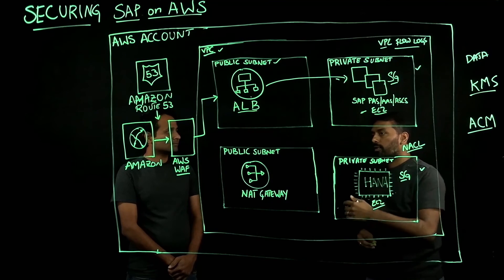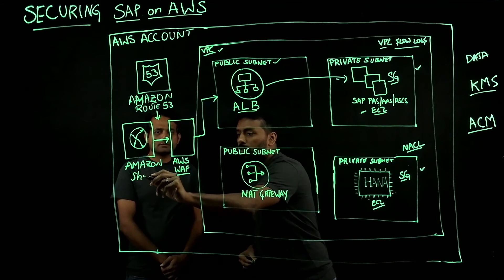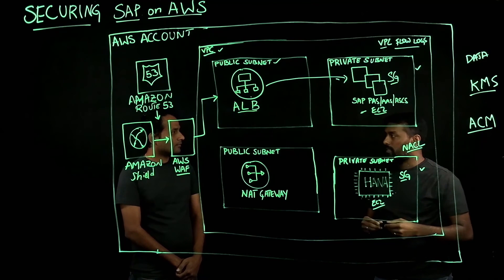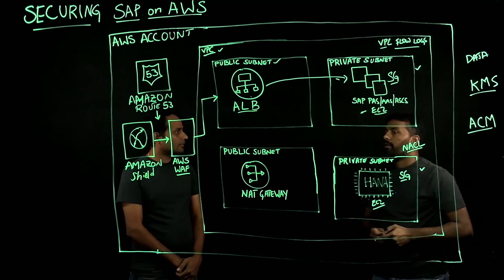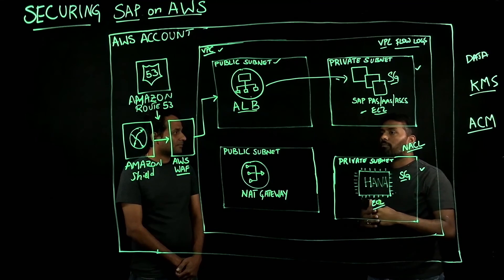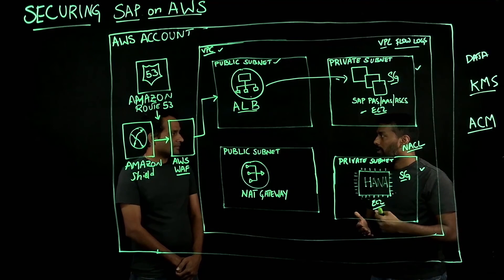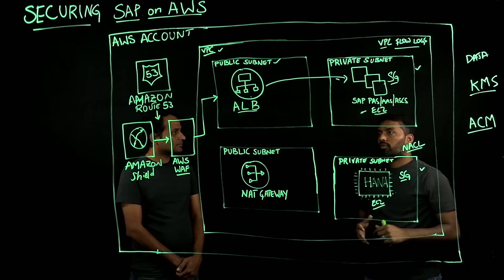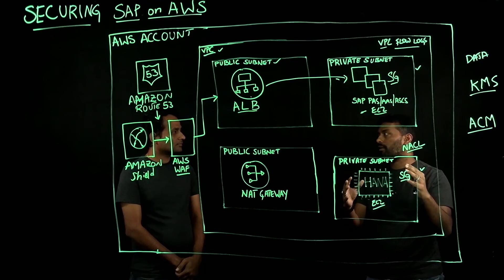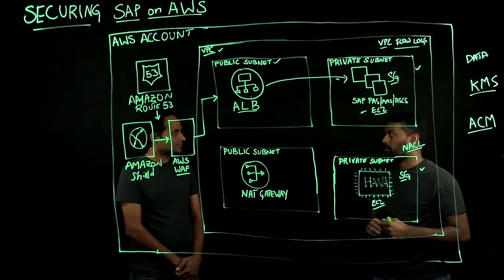Another service is Amazon Shield, which gives you protection against DDoS attacks. In addition to this, we have several other services like Amazon Network Firewall. These services help protect all the components involved in running an SAP system and help you host a secure SAP workload on AWS.